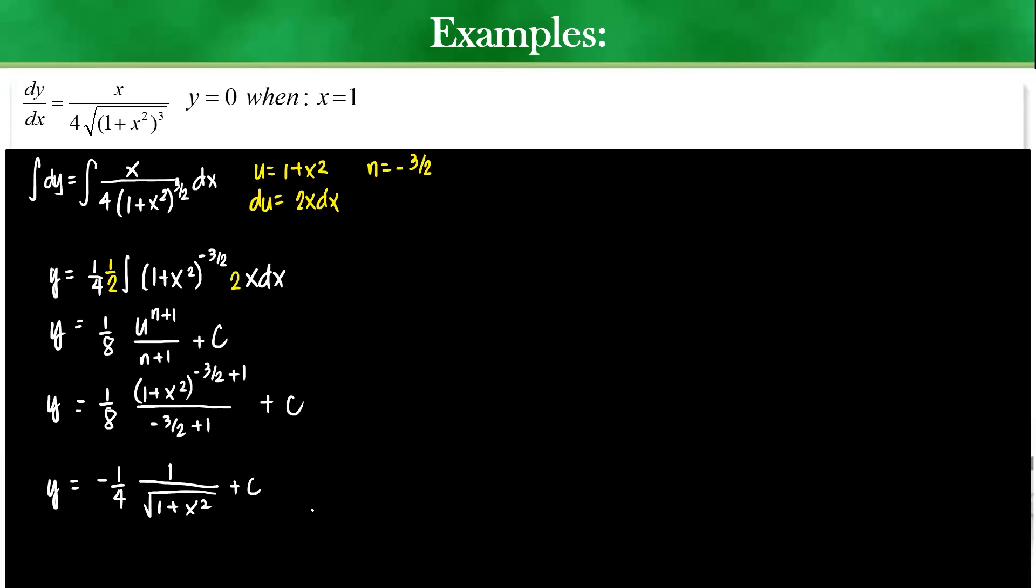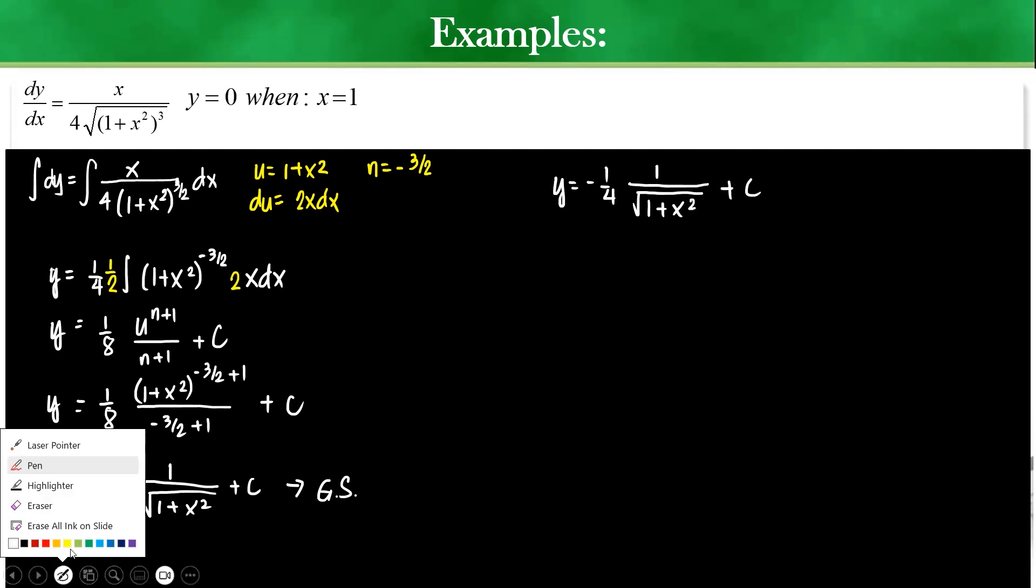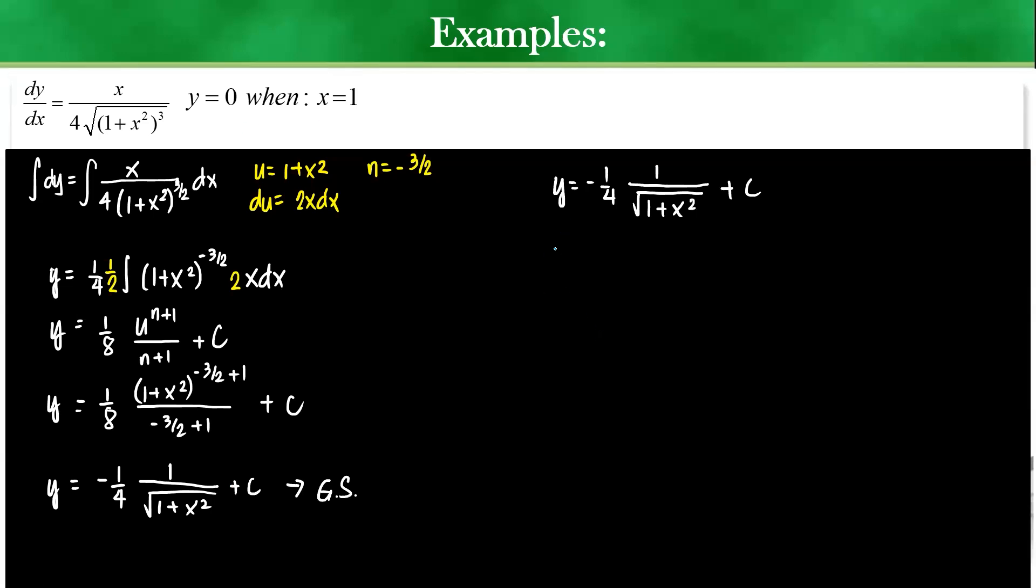So, this one is what you call again the general solution. But then you have to take note that given the general solution negative 1 fourth, 1 over the square root of 1 plus x squared plus c, you are given some conditions. What were the conditions given? In here, it says that the value of y when x is 1 is equal to 0.